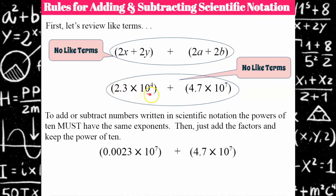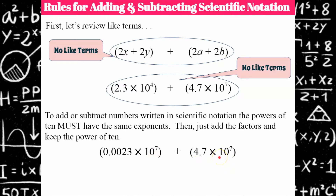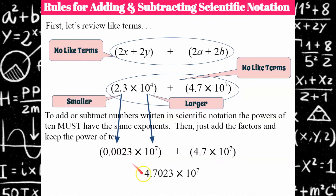This power of 10 is going to get larger by 3, which means this factor needs to get smaller by 3 digits — we move the decimal point 3 places. So my decimal point moves 1, 2, 3. Now I have a power of 10 with an exponent of 7 and another power of 10 with an exponent of 7. These are now like terms, so I can add the factors: 4.7 plus 0.0023 gives me 4.7023 times 10 to the 7th.